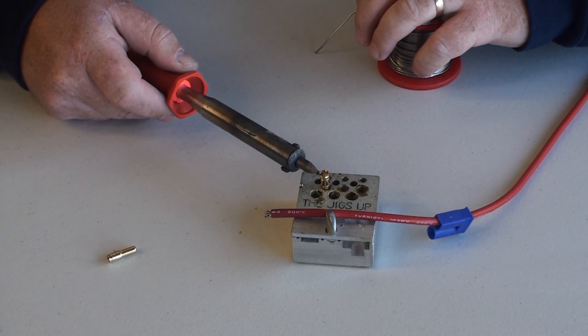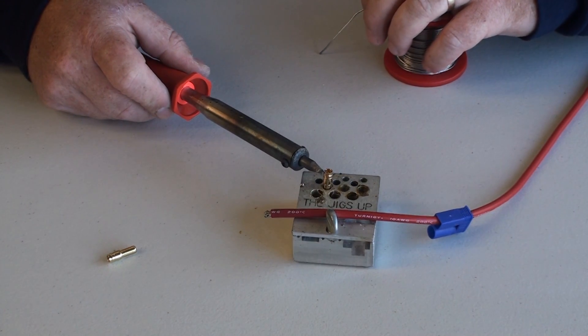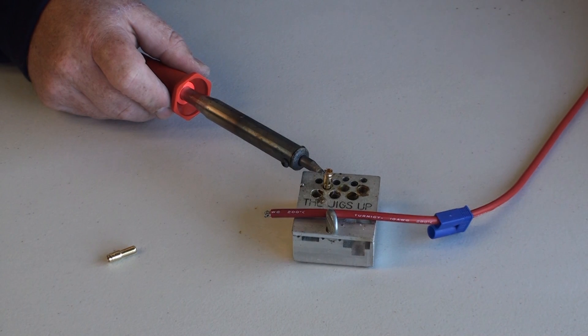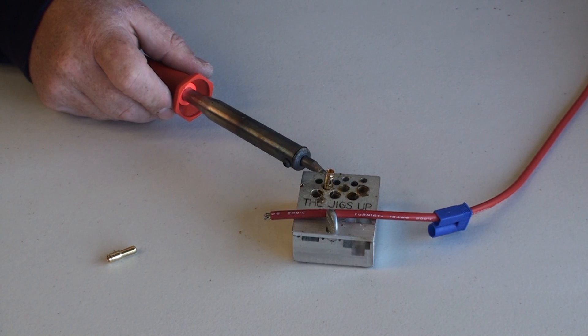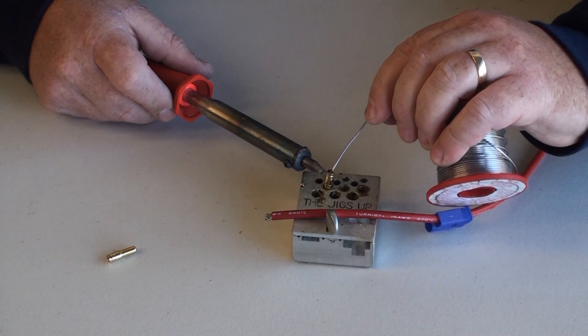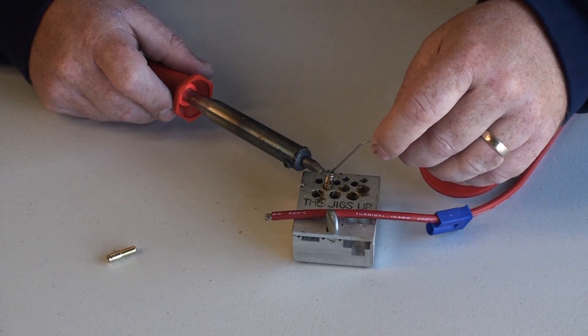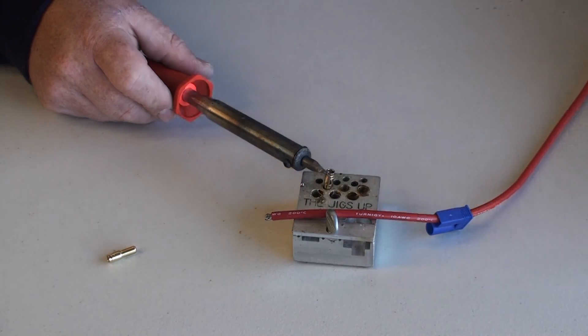Next, heat up the brass connector. It's really good to use a 60 to 80 watt soldering iron. The bigger the soldering iron, the better. You get better heat transfer, and you can get the job done more quickly. Once the connector's heated up, simply half fill the cup with solder.